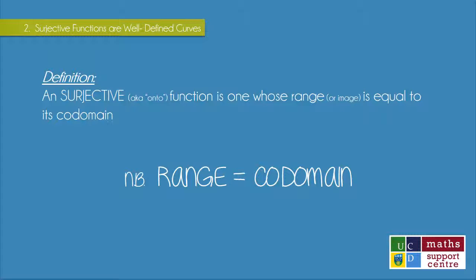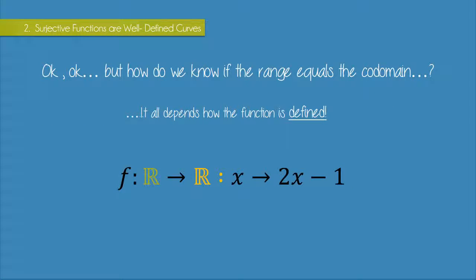So a surjective function is one whose range is equal to its codomain, so keep that in mind when you're dealing with surjective functions. Range equals codomain. In the very first functions video I mentioned the difference between the codomain and the range of a function. So the codomain is the set of all possible outputs of a function, whereas the range is the set of the actual outputs. And students often get a bit confused as to how they're actually different. But hopefully now that we learned about surjective functions, this will make a lot more sense.